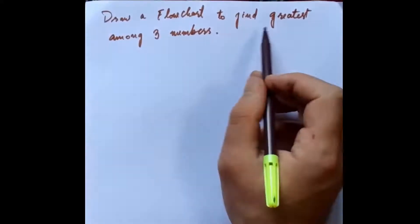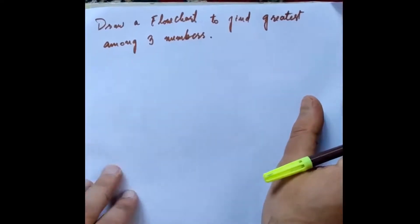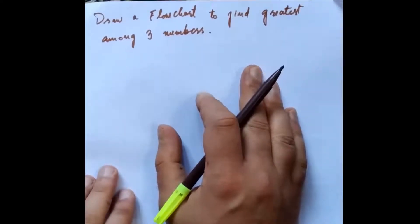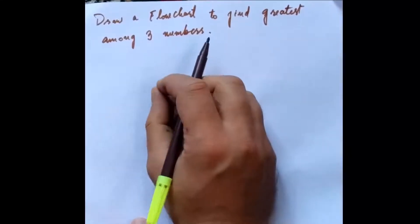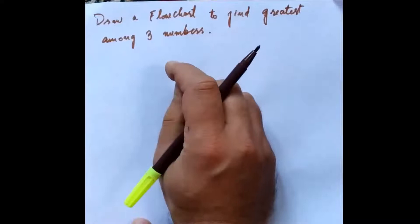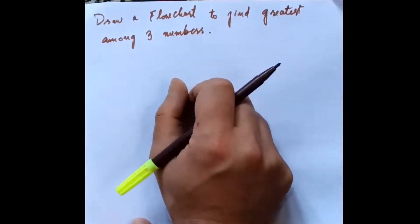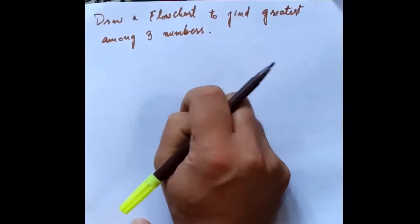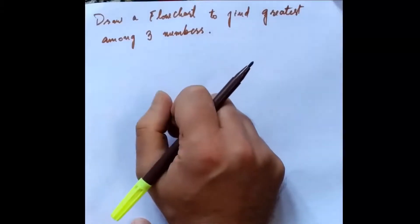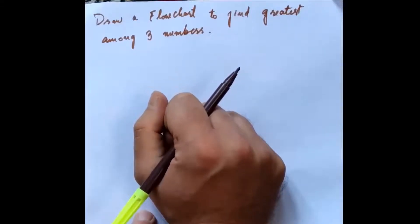I have written here: draw a flowchart to find the greatest among three numbers. So we have to draw a flowchart that will give us the greatest among three numbers. If we have A, B, and C, it will detect whether A is greater than B as well as C, or B is greater than A as well as C, or C is greater than A as well as B. We are going to find which among the three is greater.